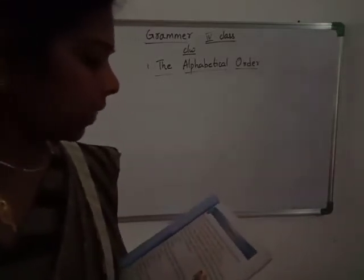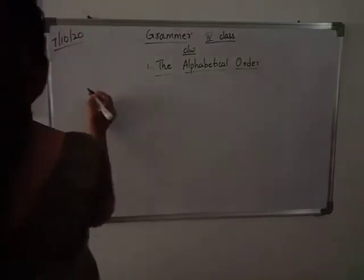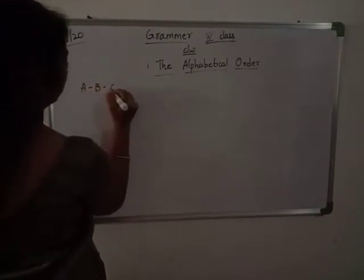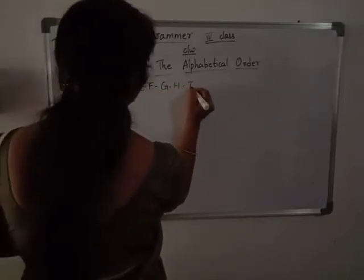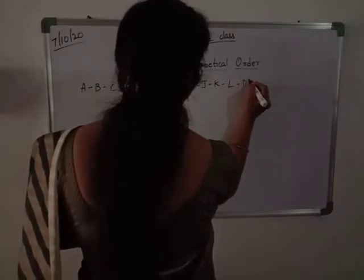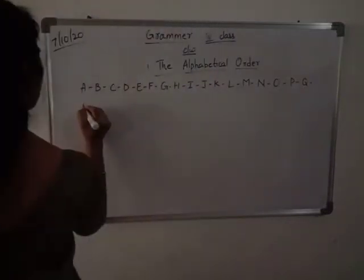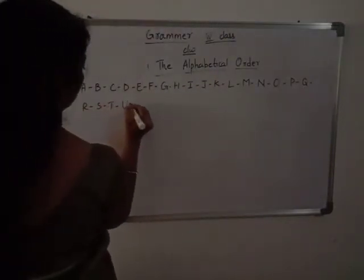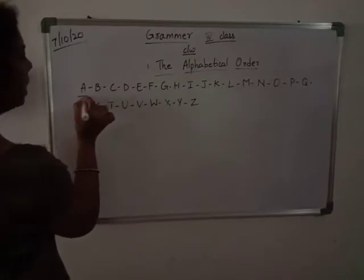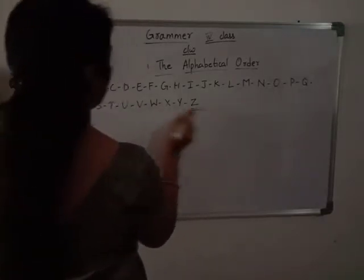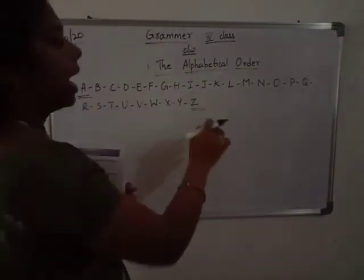The English alphabet starts with the letter A and finishes with the letter Z. We always write the alphabets in the same order. So we always start alphabets with A and end with Z, and this is the order in which we write the alphabets. This order is known as alphabetical order.